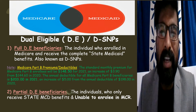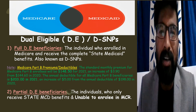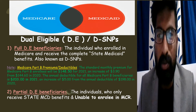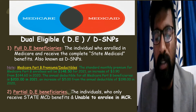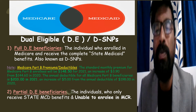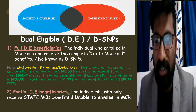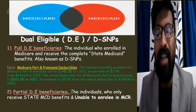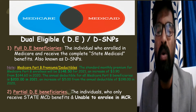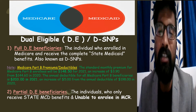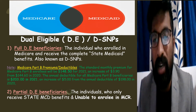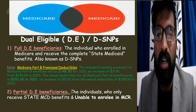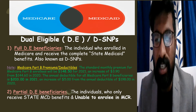Hi, welcome to PKR Vibes Career and Growth. Today we are discussing dual eligible, also known as Dual Eligible Special Needs Plans (DSNPs). Dual eligible refers to a person who is getting benefits from both federal Medicare and their state Medicaid.